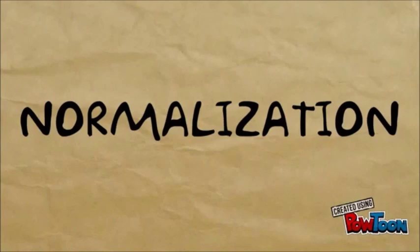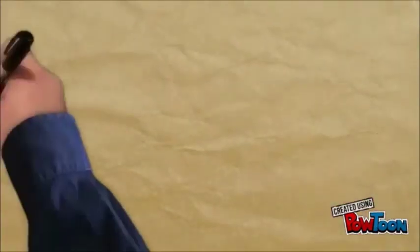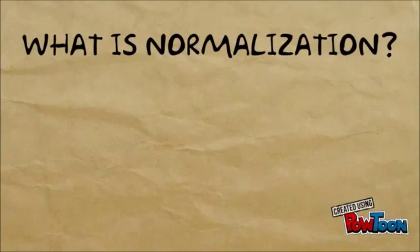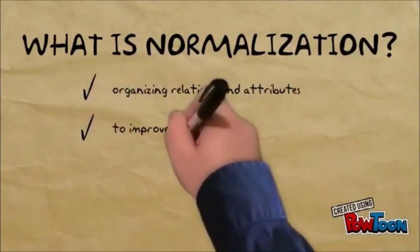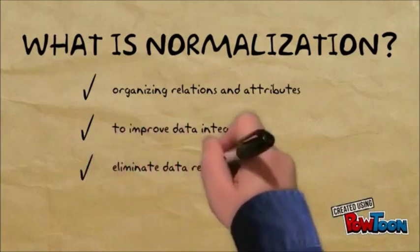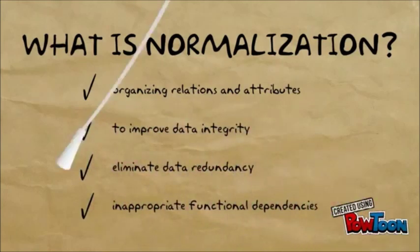First, we need to define the term normalization. So what is normalization? It is a process of organizing relations and attributes of a relational database to improve data integrity and to eliminate data redundancy and inappropriate functional dependencies.